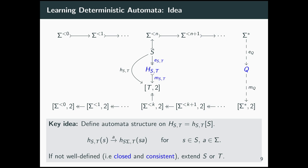The key idea of the learning algorithm is to define an automaton structure on this image set. Whenever you are in the image of some word s and read an input letter a, there is a transition to the image of the word sa. There is a potential problem: these transitions have no reason to be well-defined in general. You need to ensure that the element on the right-hand side is in the image set capital H_{S,T} — this is called closedness. You also need to ensure the transition does not depend on the choice of representatives — this is called consistency. Whenever a transition is not well-defined, you extend the sets S or T by adding words that fix the issue.